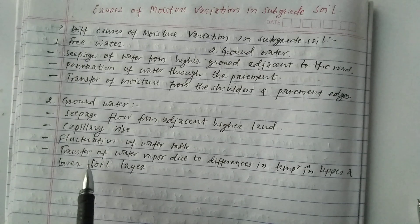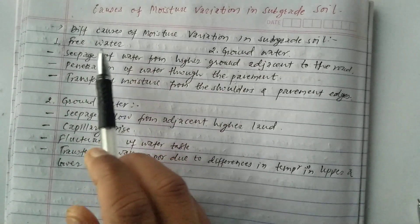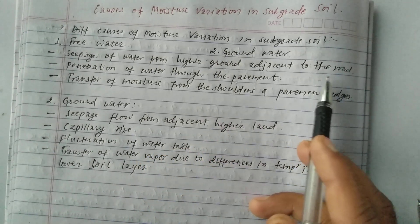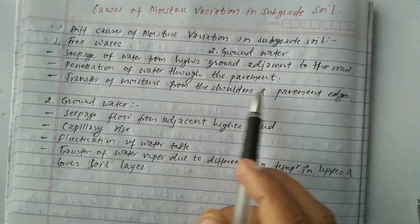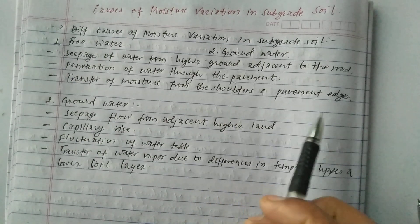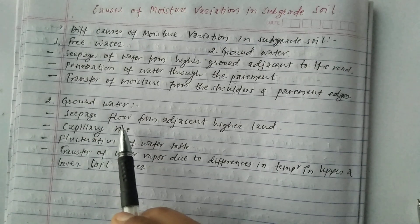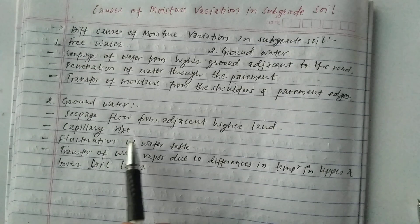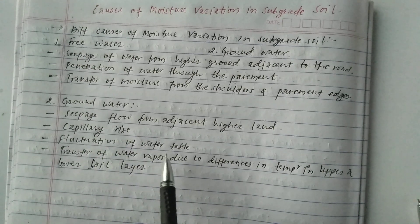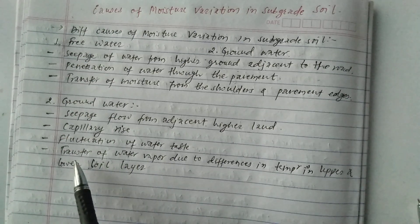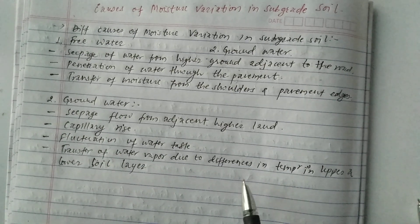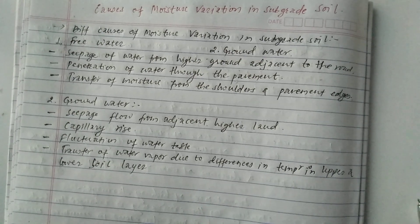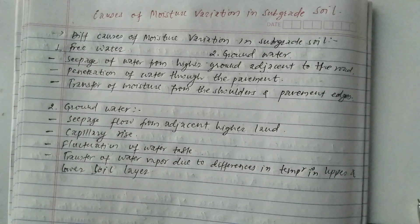So basically, under free water we have three causes of moisture variation in subgrade soil: seepage of water from higher ground adjacent to the road, penetration of water through the pavement, and transfer of moisture from the shoulders and pavement edges. Under groundwater, the causes are: seepage flow from adjacent higher land, capillary rise, fluctuation of the water table, and transfer of water vapor due to temperature differences in upper and lower soil layers.